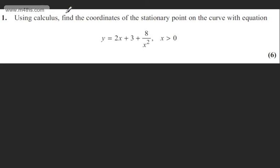This is question 1. It says using calculus, find the coordinates of a stationary point on the curve with the equation y equals 2x plus 3 plus 8 over x squared, where x is greater than 0.